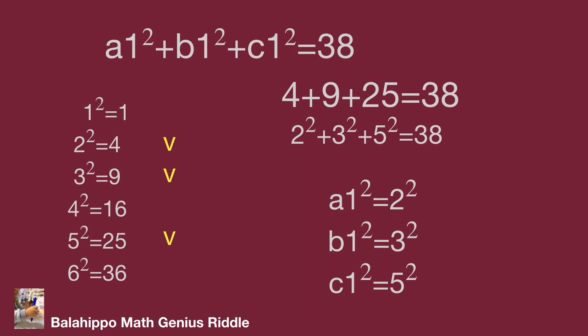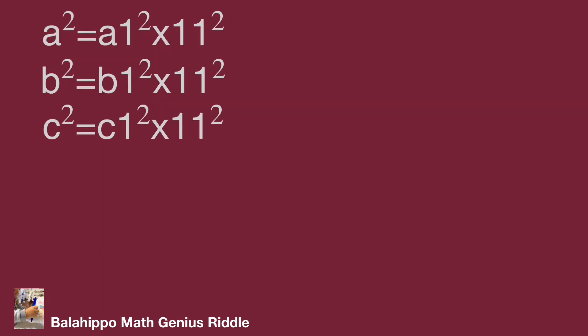Now we get a1² equal to 2². b1² equal to 3². c1² equal to 5². Then substitute a1, b1, c1 value in these equations.